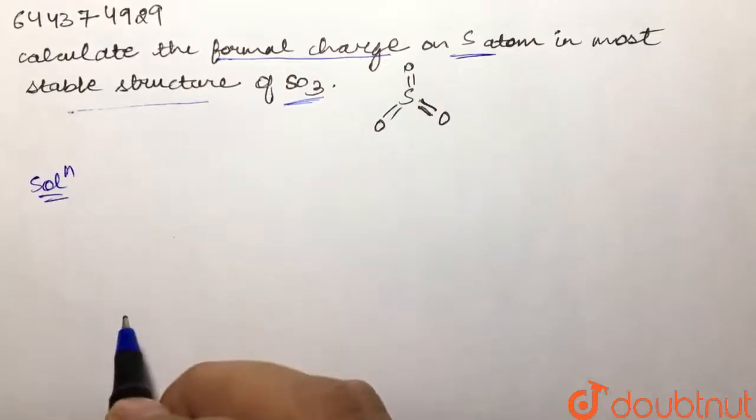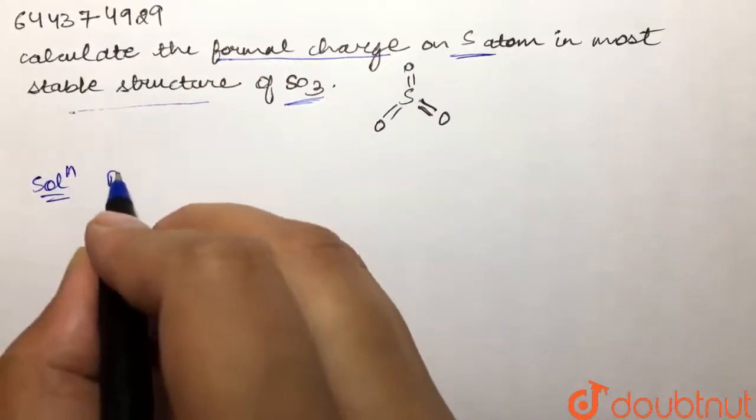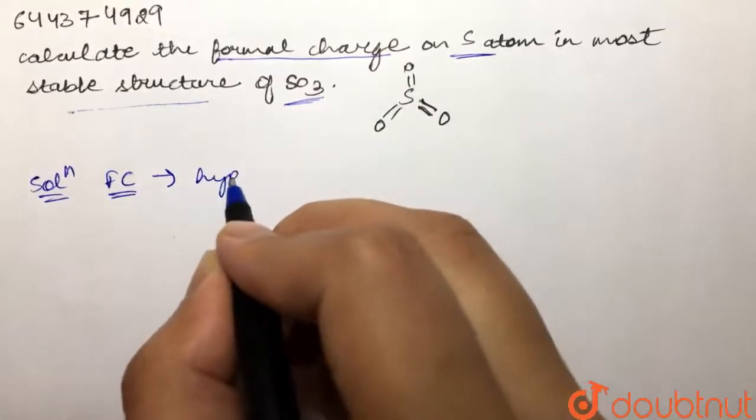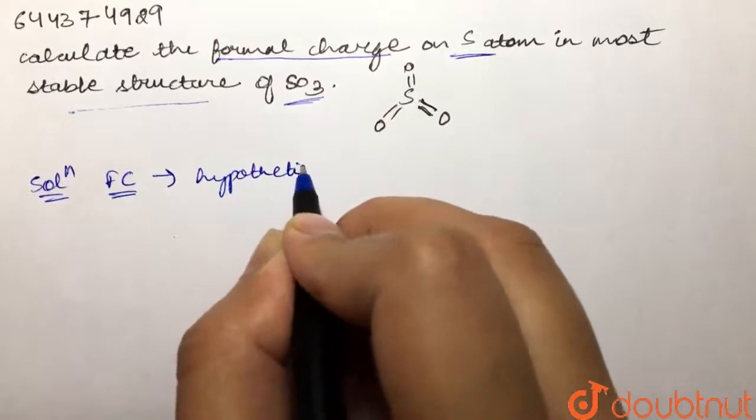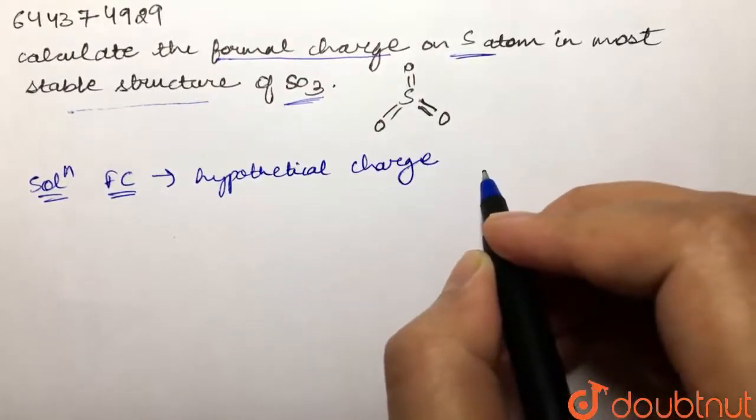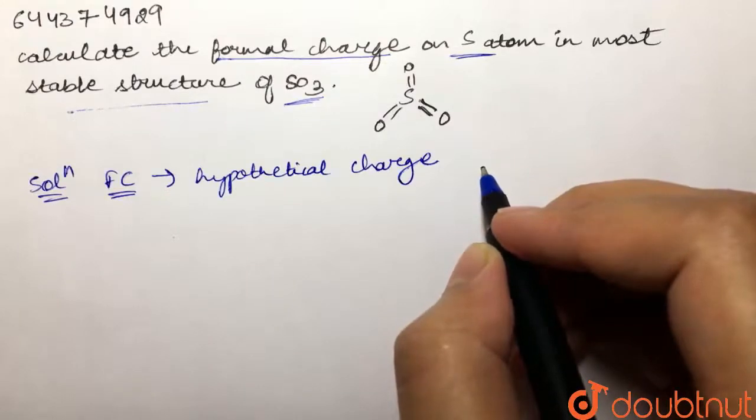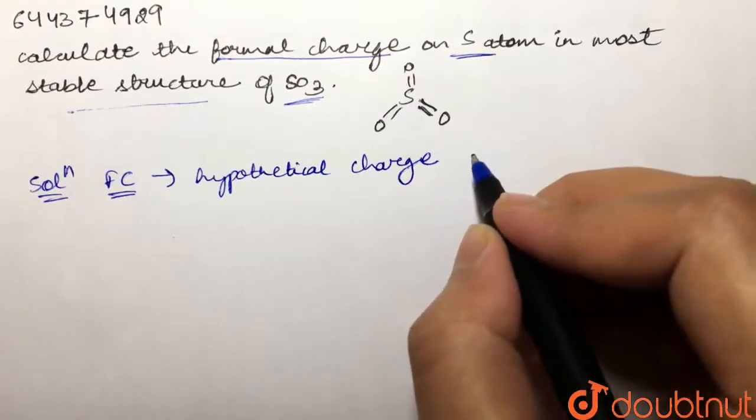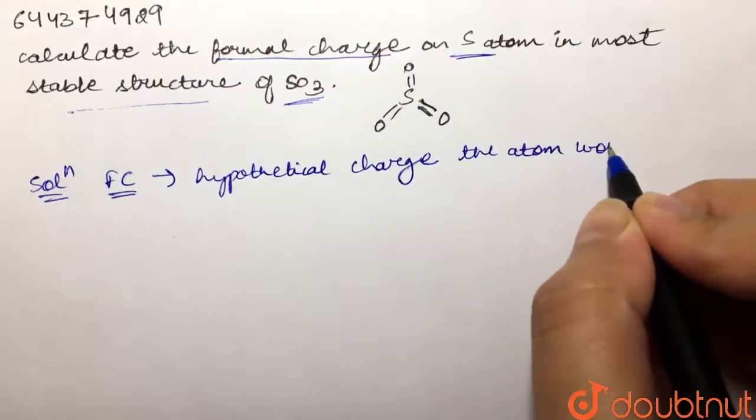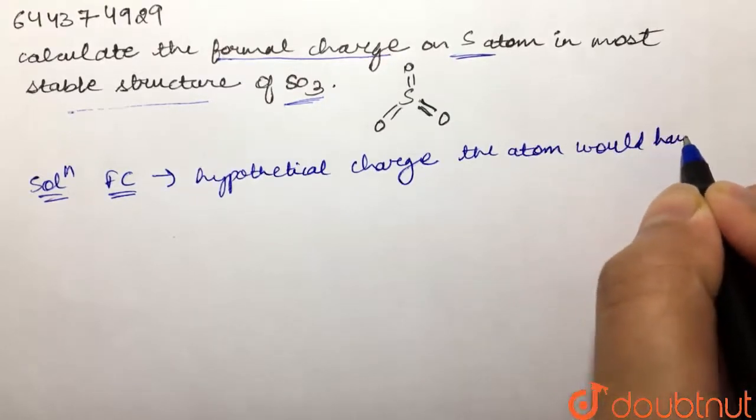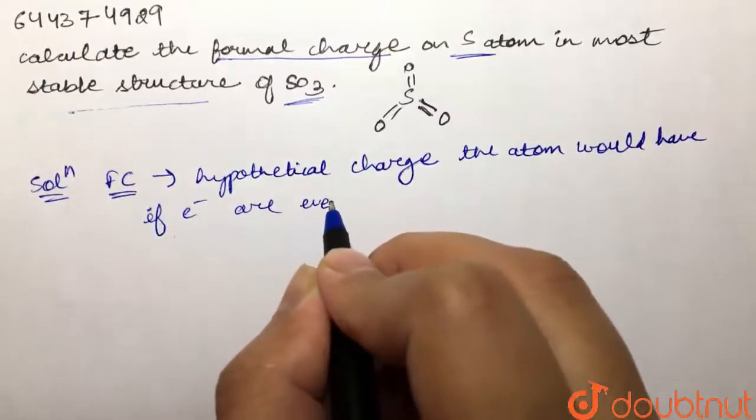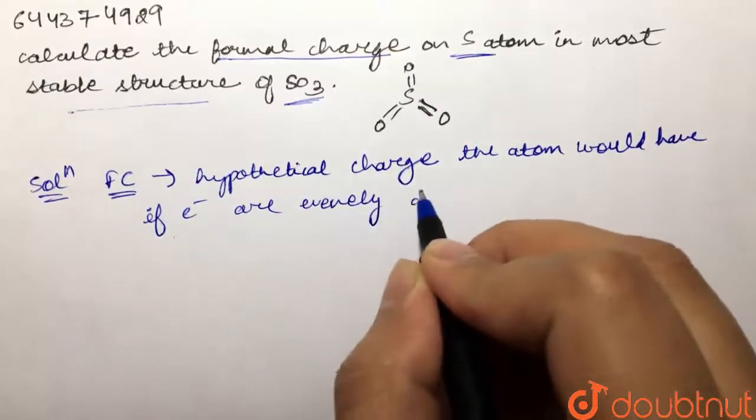First of all, what is formal charge? Formal charge of an atom in a molecule is the hypothetical charge the atom would have if electrons in the bonds are evenly distributed between the atoms.